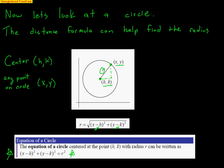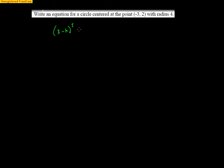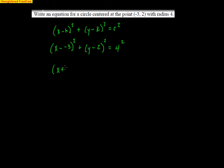Please make sure you write down this equation of a circle — it's really important and we're going to use it a lot. Here's an example: write an equation for a circle centered at the point negative 3 comma 2 with radius of 4. Using the formula x minus h squared plus y minus k squared equals r squared, we get x minus negative 3 squared plus y minus 2 squared equals 4 squared. Cleaning this up: x plus 3 squared plus y minus 2 squared equals 16.